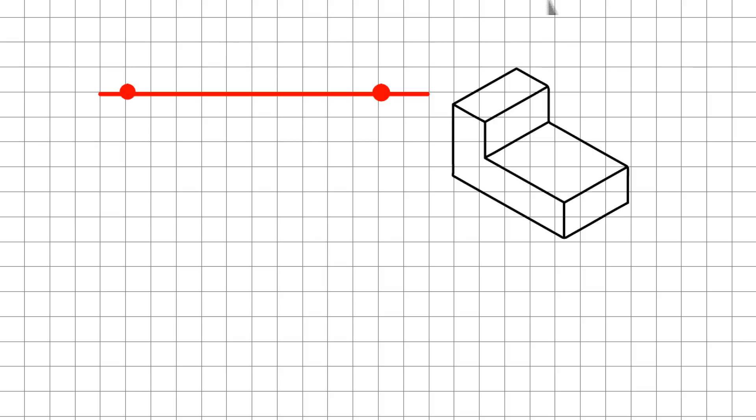The next thing we're going to do is draw a construction line. This construction line is going to establish the height of our total object, which is shown over here. The total height is represented on the left edge of our isometric view.